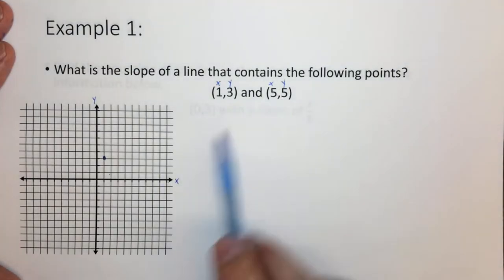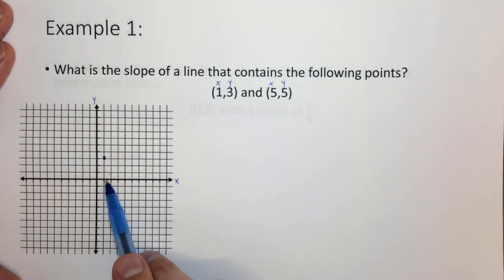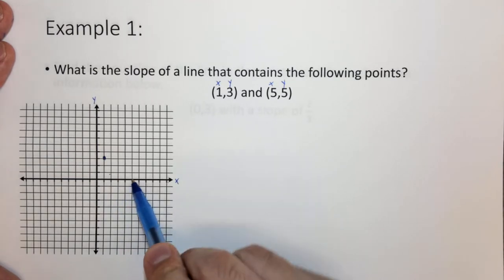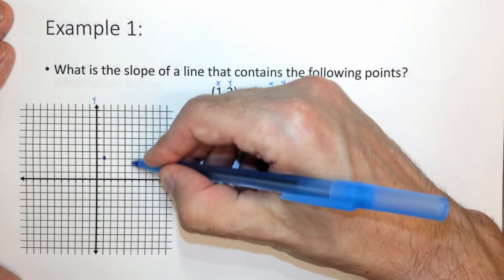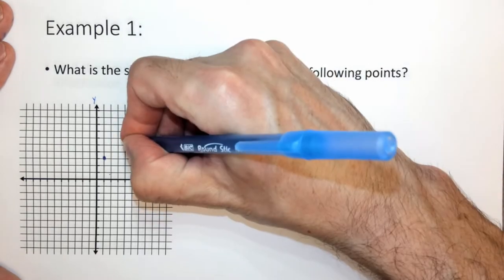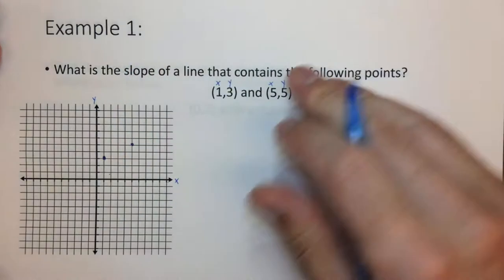We also want five on the x, one, two, three, four, five, and five on the y, one, two, three, four, five. So those are our two data points.